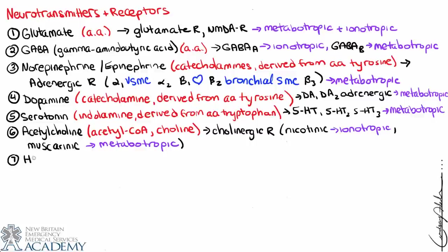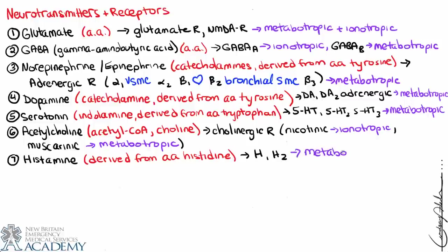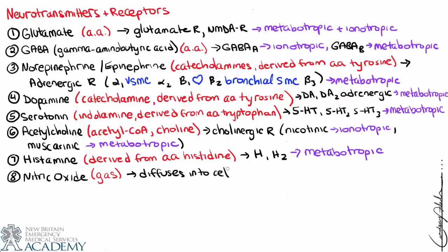Histamine is derived from the amino acid histidine and binds to H1 and H2 receptors, functioning as metabotropic. Nitric oxide is a gas — one of a couple of gases that can function as neurotransmitters. It's a bit different: it diffuses into cells rather than binding on the outside. However, it still promotes a series of reactions that generate a second messenger, so it works somewhat similarly in that regard.